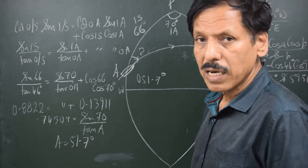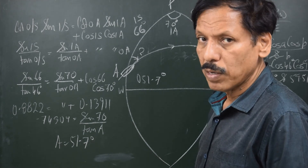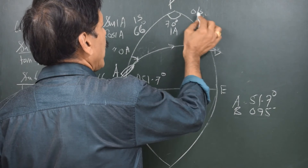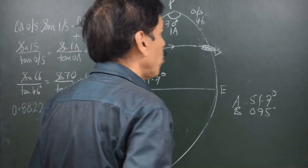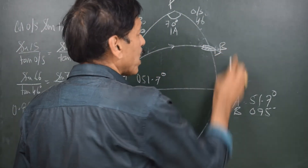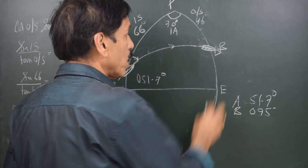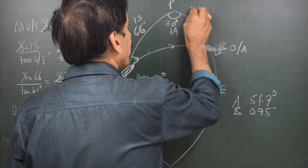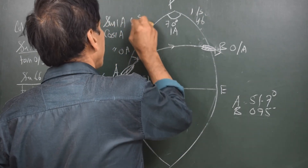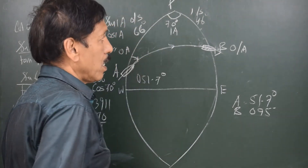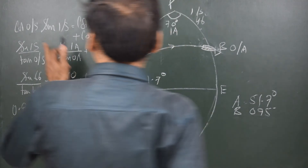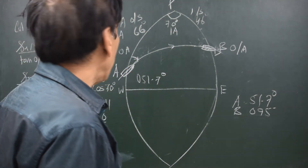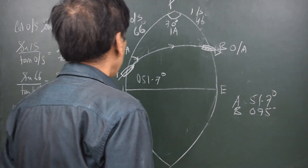Now we will find out angle B using the four-part formula again. We have 66°, 70°, and 46° as three continuous known parts, and angle B is unknown. This becomes the outer angle, this the inner side, and this the outer side, while this remains the inner angle. The formula is the same: cot(outer side) × sin(inner side) = cot(outer angle) × sin(inner angle) + cos(inner side) × cos(inner angle).